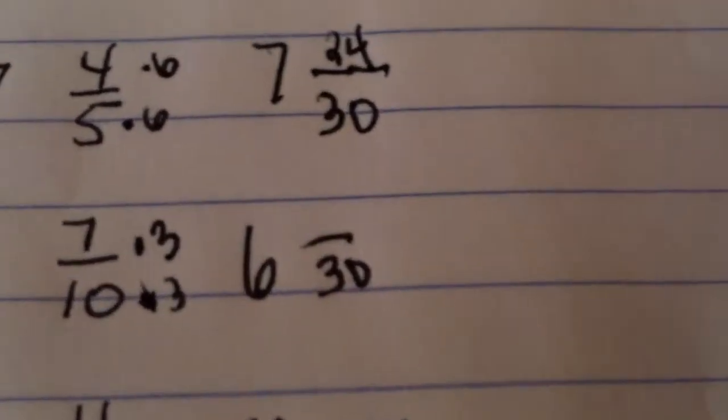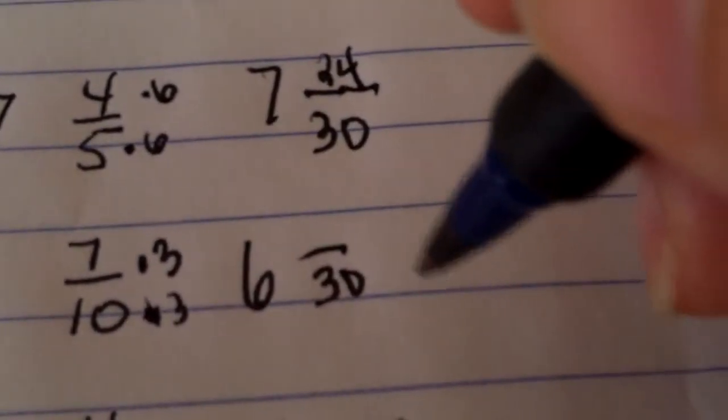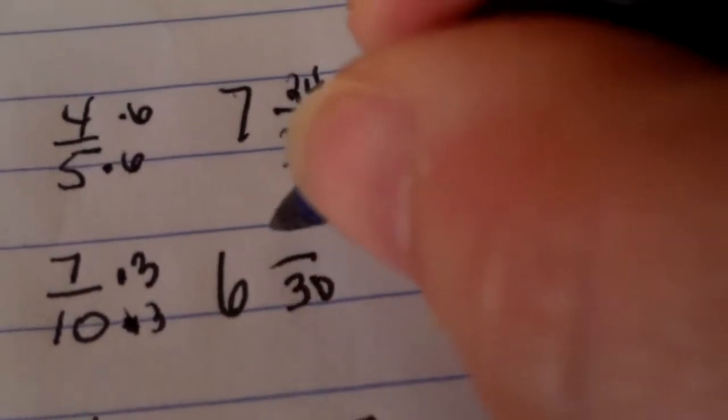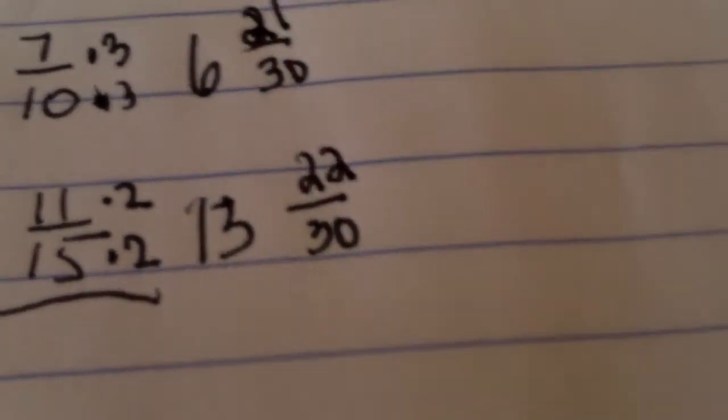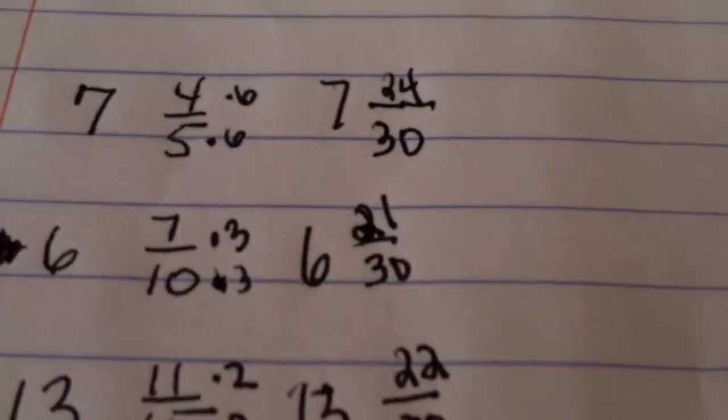3 is going to be our missing factor there, 10 times 3, that means 7 times 3. And now down the bottom, this was missing the factor of 2 in the bottom, so now our top numerator there is going to have to be multiplied by 2.